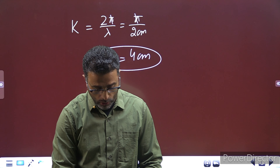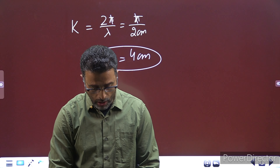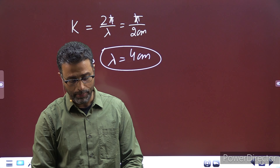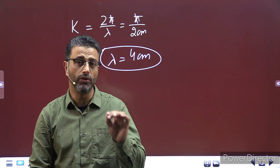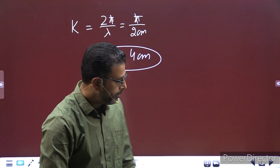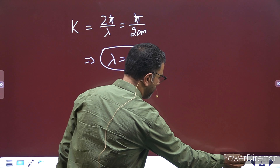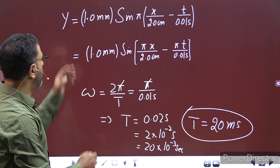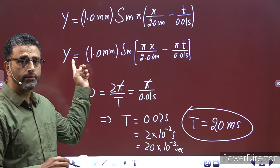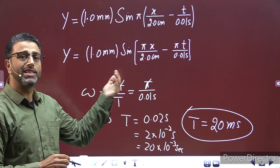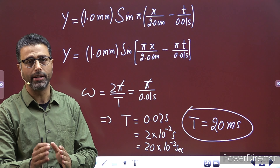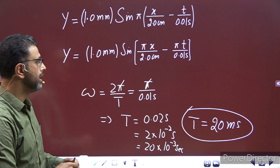Part B: write the equation for the velocity of the particles। Particle velocity हमें लिखनी है — wave velocity नहीं। y जो है that is displacement of the particle from the equilibrium position। इसकी differentiation with respect to time that will give you particle velocity।